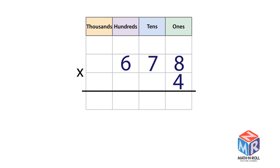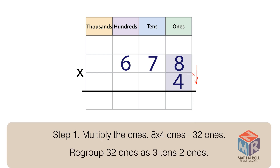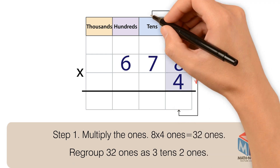678 × 4. Step 1: Multiply the 1s. 8 × 4 ones equals 32 ones. Regroup 32 ones as 3 tens and 2 ones.